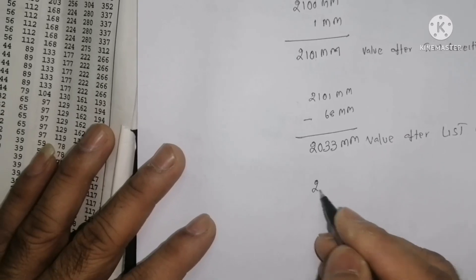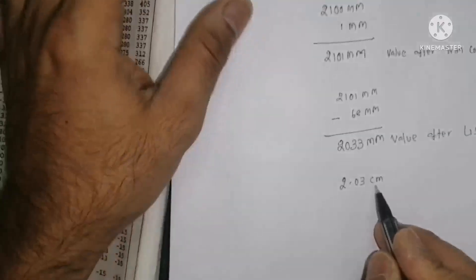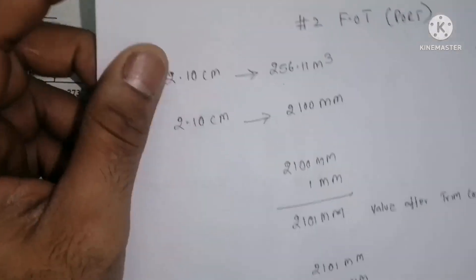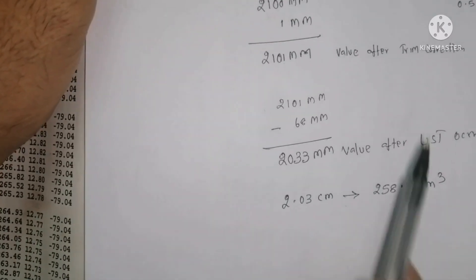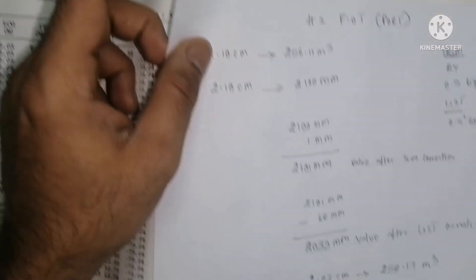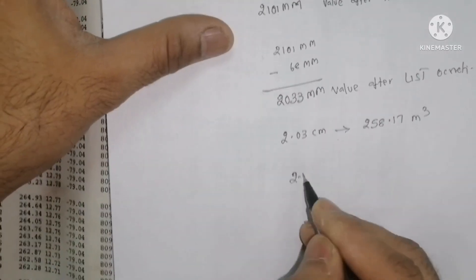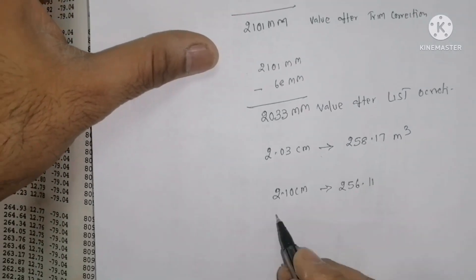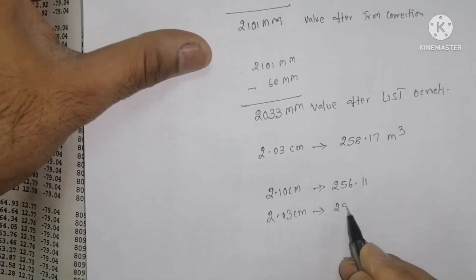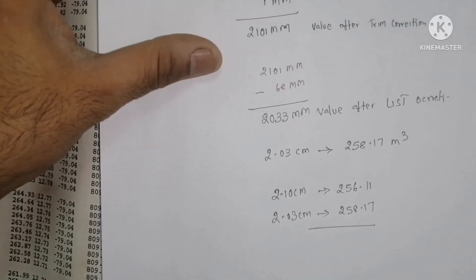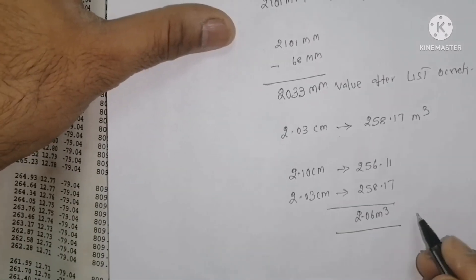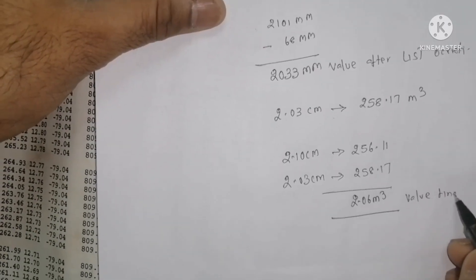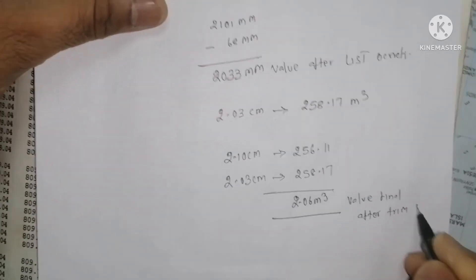So the corrected sounding value is 2.03 cm. From the tank table, 2.03 cm gives a volume of 258.17 cubic meters. That means: at 2.10 cm the volume was 256.11 m³, and after trim and list correction at 2.03 cm it is 258.17 m³.